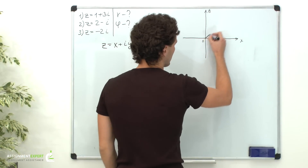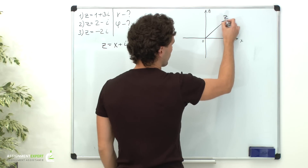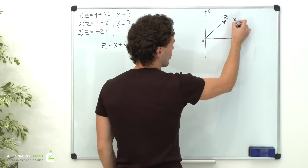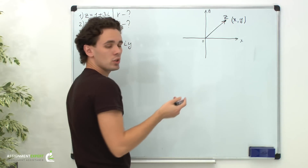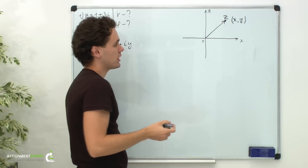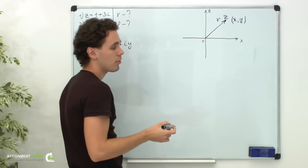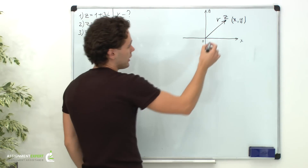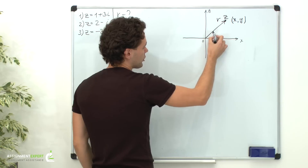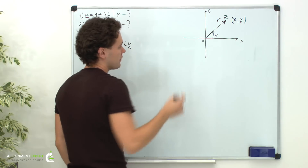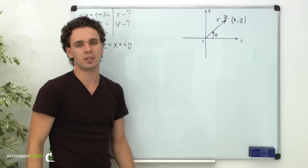This is the radius vector representing complex number z with endpoint x, y. The modulus r of the obtained radius vector is called the modulus of the complex number, and the angle phi between the positive direction of the x-axis and the radius vector is called the argument of the complex number.